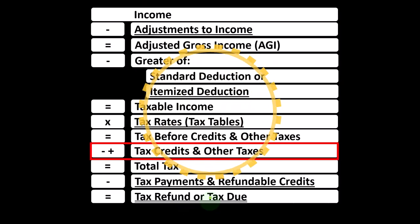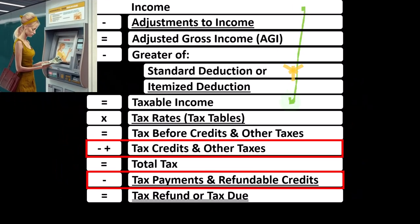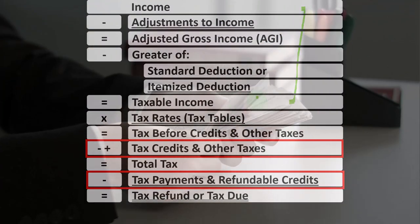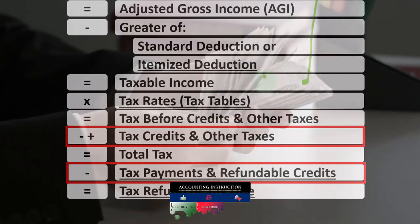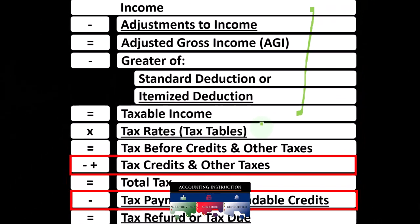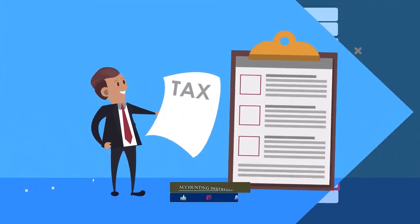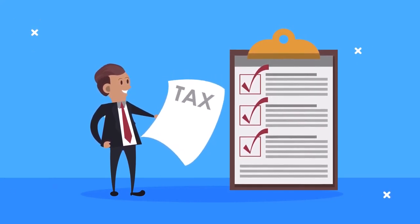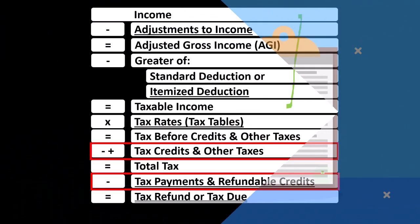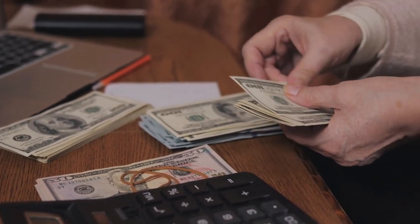Looking at the income tax formula, we're down at the bottom in the credit area. The first half of the income tax formula is essentially an income statement ending with taxable income, similar to net income in a normal income statement. We then calculate the tax using the progressive tax system — not a flat tax, not one rate — to get to the tax before credits and other taxes. Then we deal with credits, other taxes like self-employment tax, and payments in the form of estimated tax payments or withholdings, finally arriving at the tax refund or tax due.